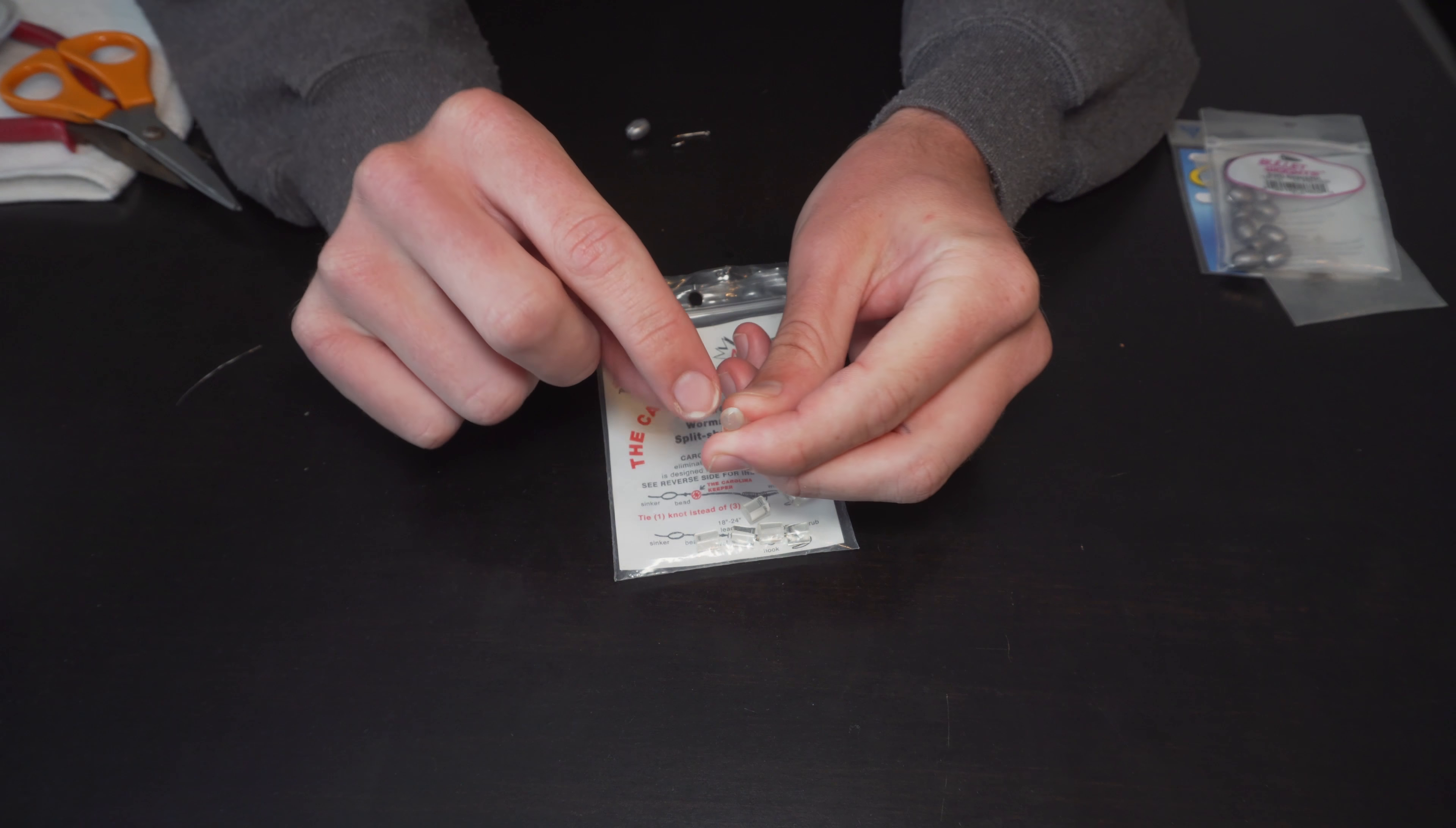Now we're going to take our Carolina Keeper. And we're going to use some pliers here. I've got some, you can use needle nose. I got a regular, like, or a little flat plier there. And we're going to squeeze kind of right where the little indents are on each side. You'll notice when you see it. And when you squeeze that, it opens up that little stopper there. So all we're going to do is we're going to put our line through.